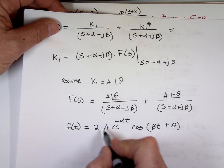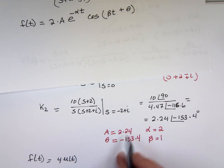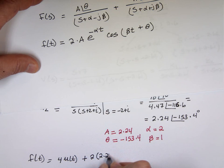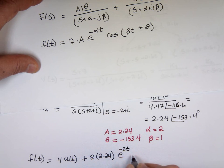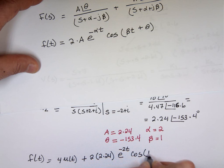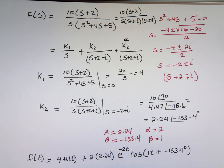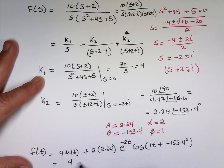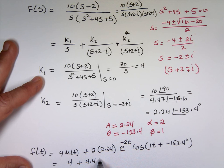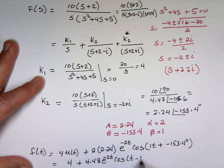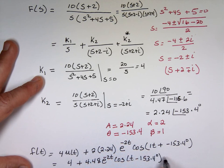2 times 2.24, e to the minus alpha is 2, negative 2t, cosine beta, beta is 1, plus theta which is negative 153.4. That's 1t. Now I'm going to clean it. It's 4 plus 4.48 e to the minus 2t cosine t minus 153.4, and I'll just put u sub t at the end.